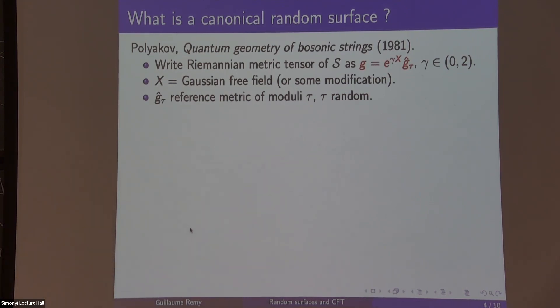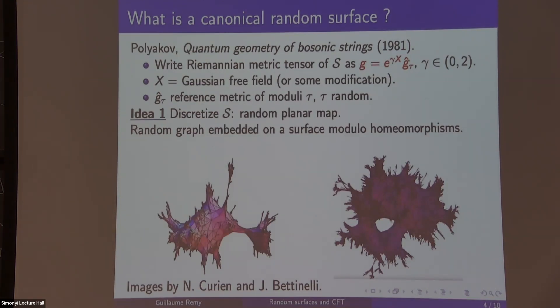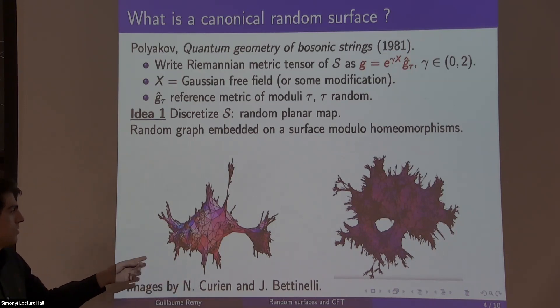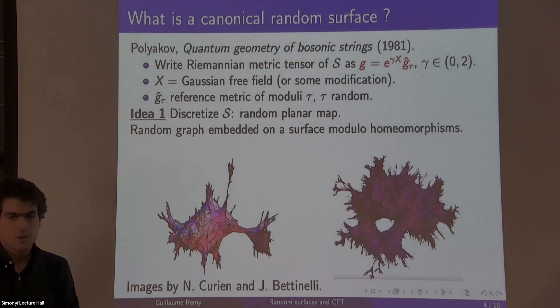Then in probability, there are two main ideas to make sense of this rigorously. One is discrete, one is continuum. In the discrete, you can discretize your surface, called random planar maps. It's a random graph embedded on the surface, modulo homeomorphisms. These are pictures for the sphere and the torus topology.